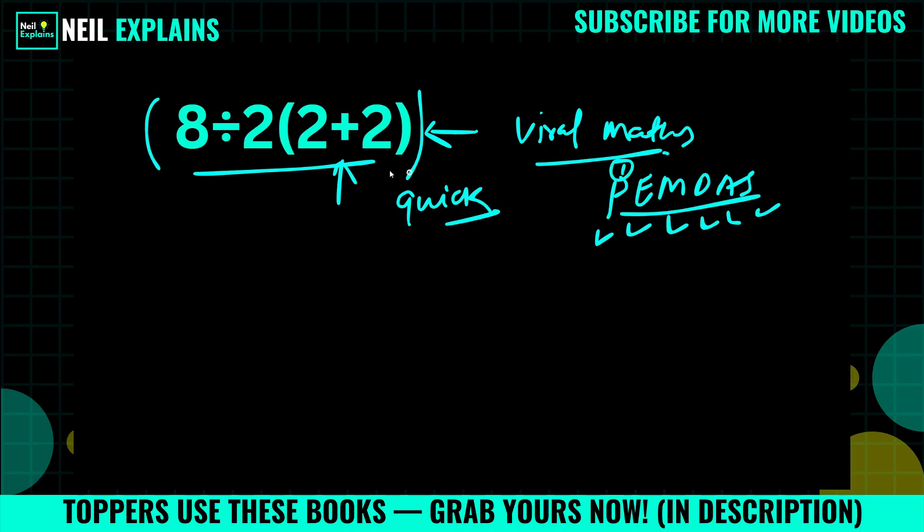First we will do parenthesis, then we will solve for the division part. I know there will be multiplication, but we will solve the division part, then third will be multiplication. I will explain why.